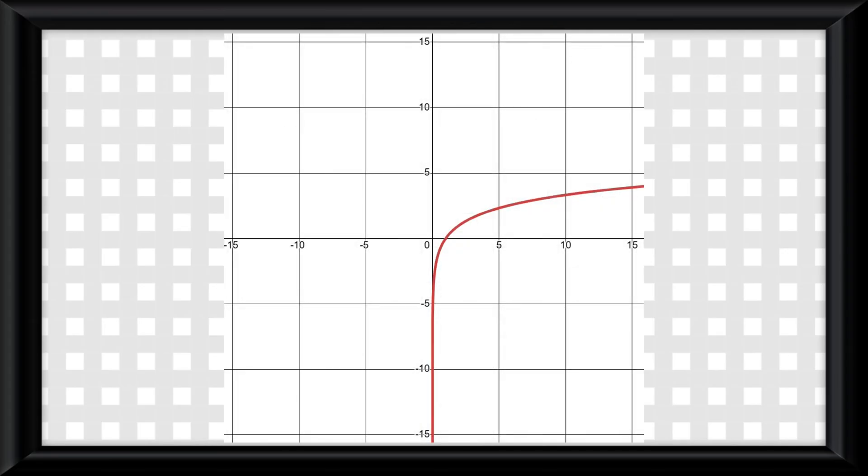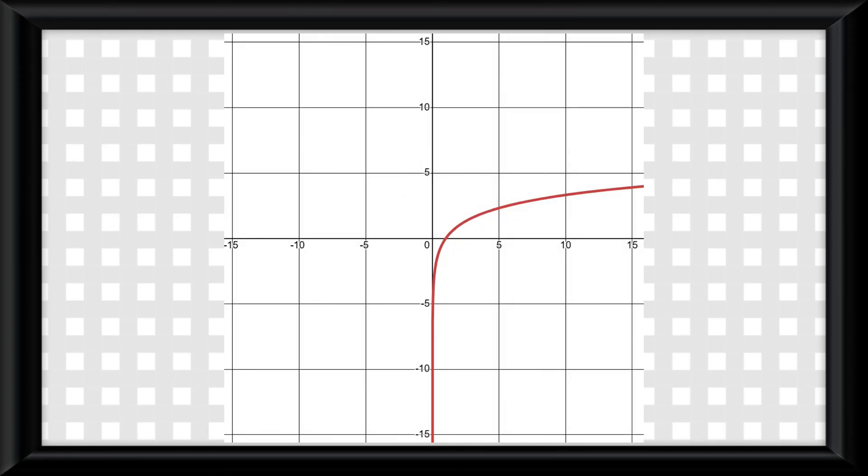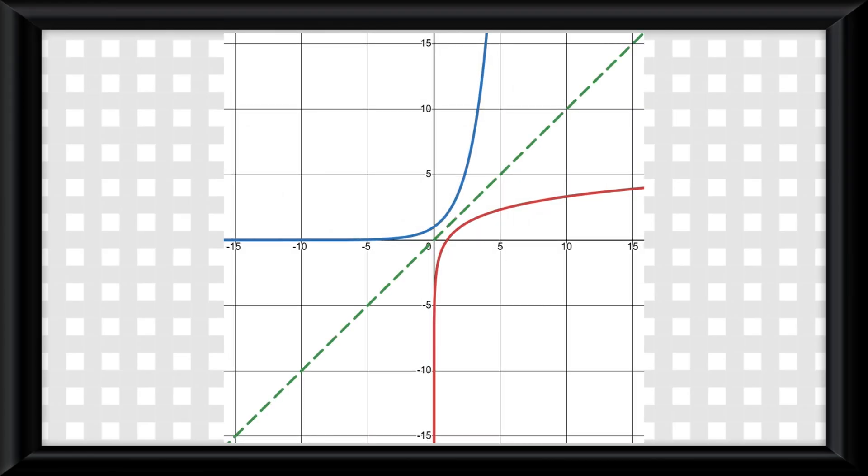And let's look at a log graph. You'll notice it kind of looks like an exponential graph just flipped around, and that's because it is. The logarithmic graph is simply a reflection of the corresponding inverse exponential graph over the line y equals x.